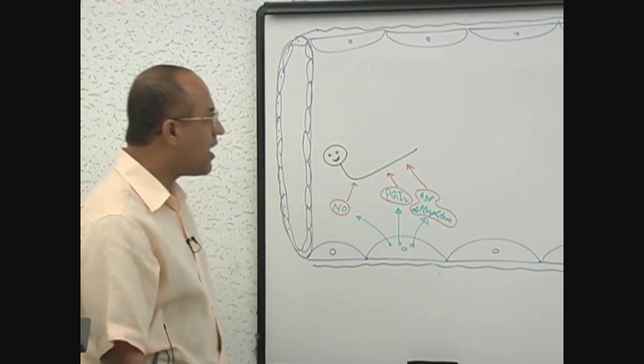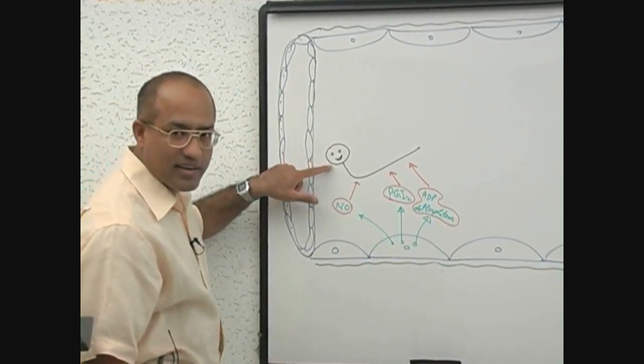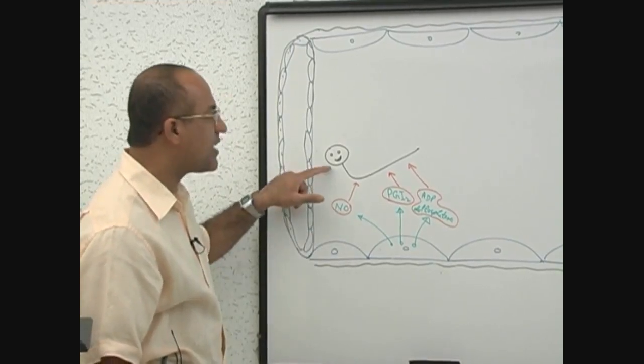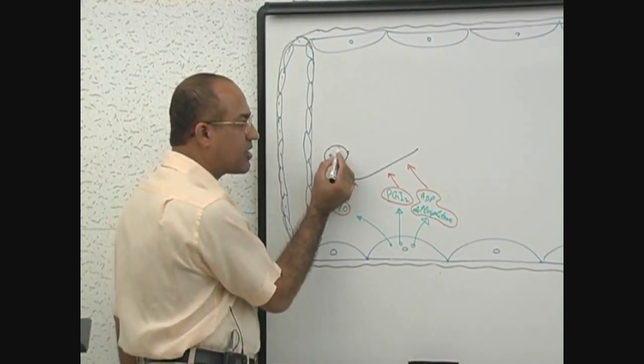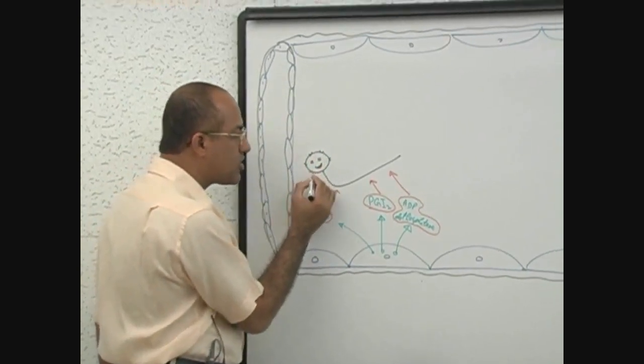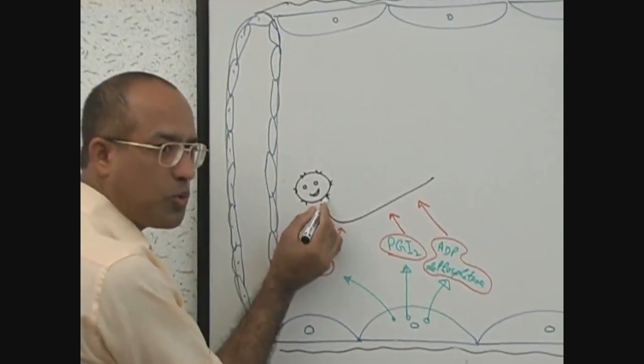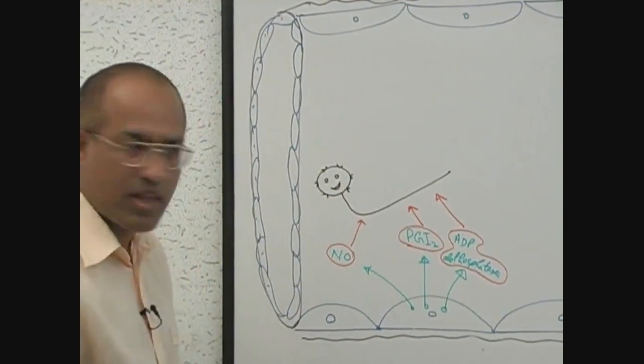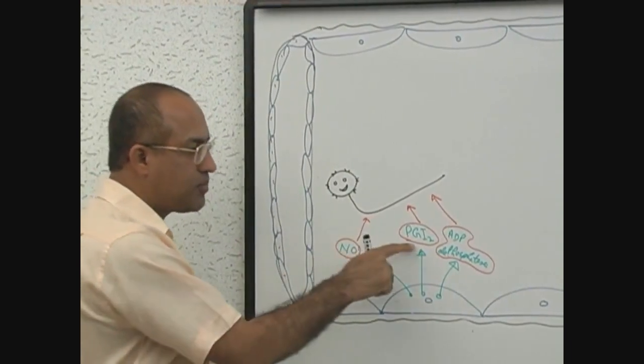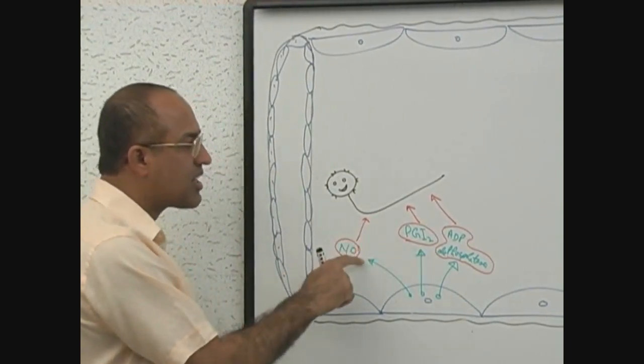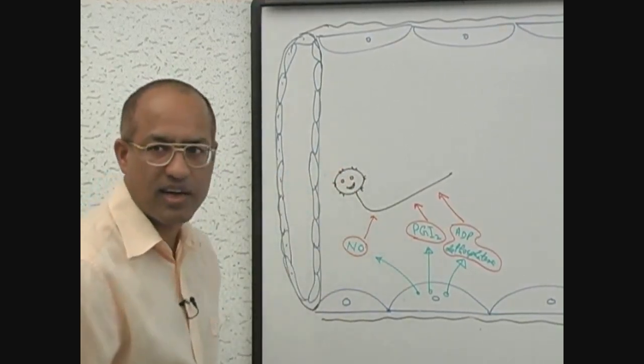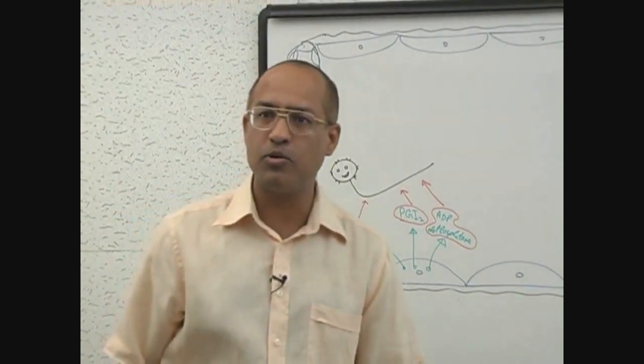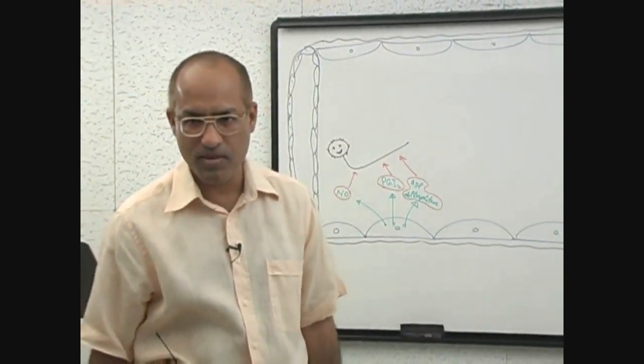Why? Because for the platelet to stick to the endothelial surface, platelet receptors should be in active state. Platelets have certain receptors and those receptors should be in active state, only then will platelets stick. But nitric oxide or PGI2, these substances, when they bind with the platelet, they inactivate the receptors of the platelets and platelets are not able to bind with the healthy endothelium.